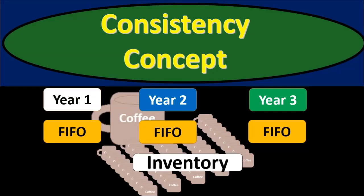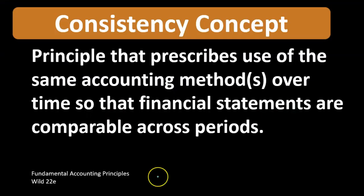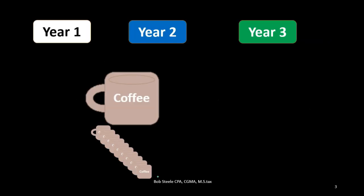Now we'll discuss the consistency principle as it relates to inventory assumptions. The consistency principle prescribes using the same accounting methods over time so that financial statements are comparable across periods. Here we're considering flow assumptions — first in first out, last in first out, or the average method — which affect the financial statements and therefore should remain consistent.